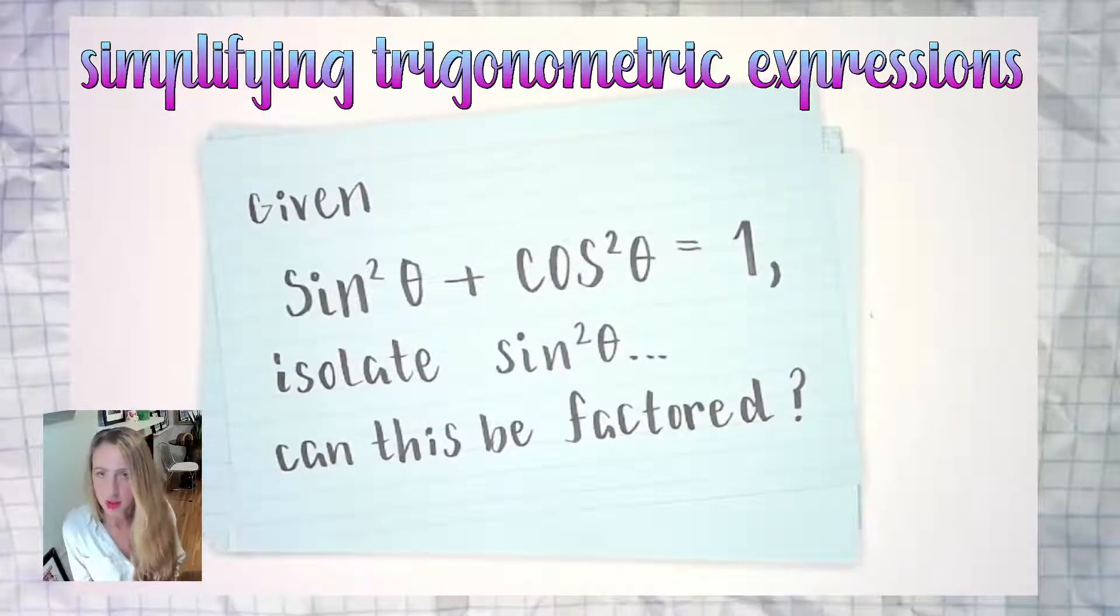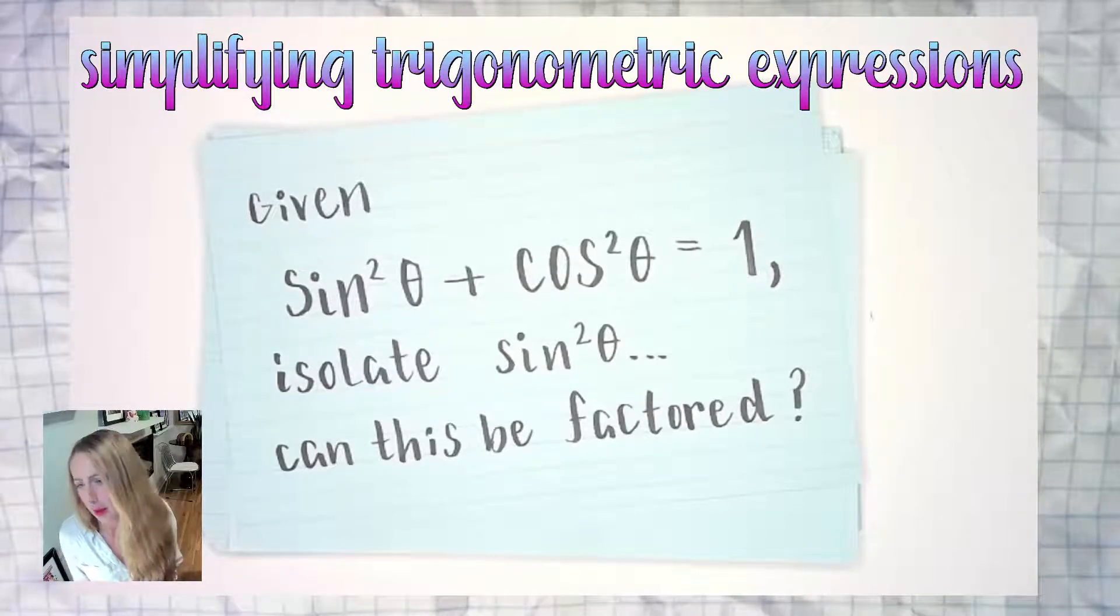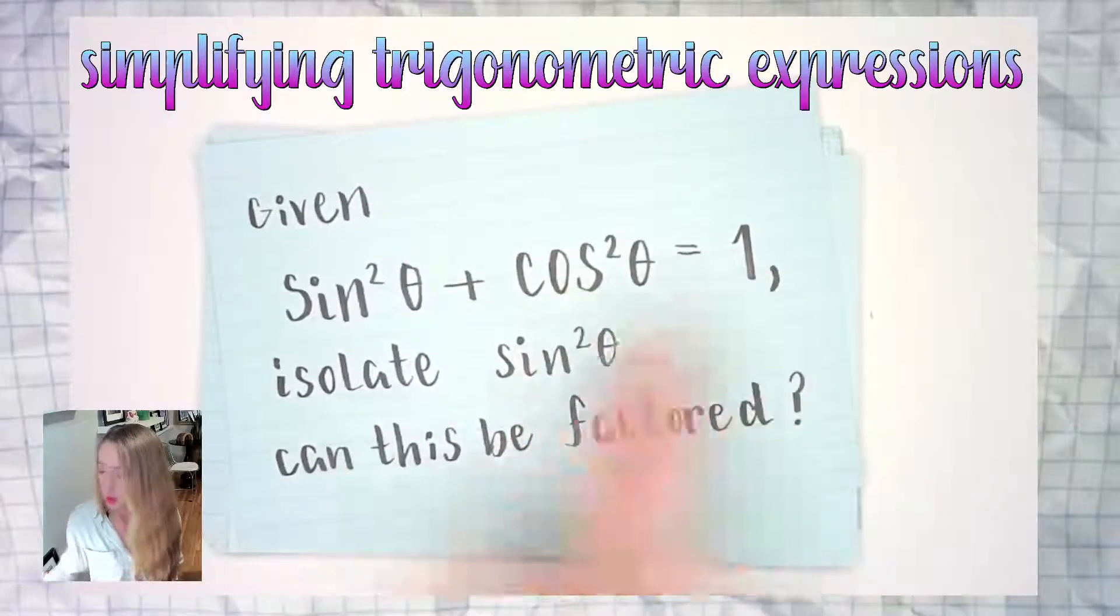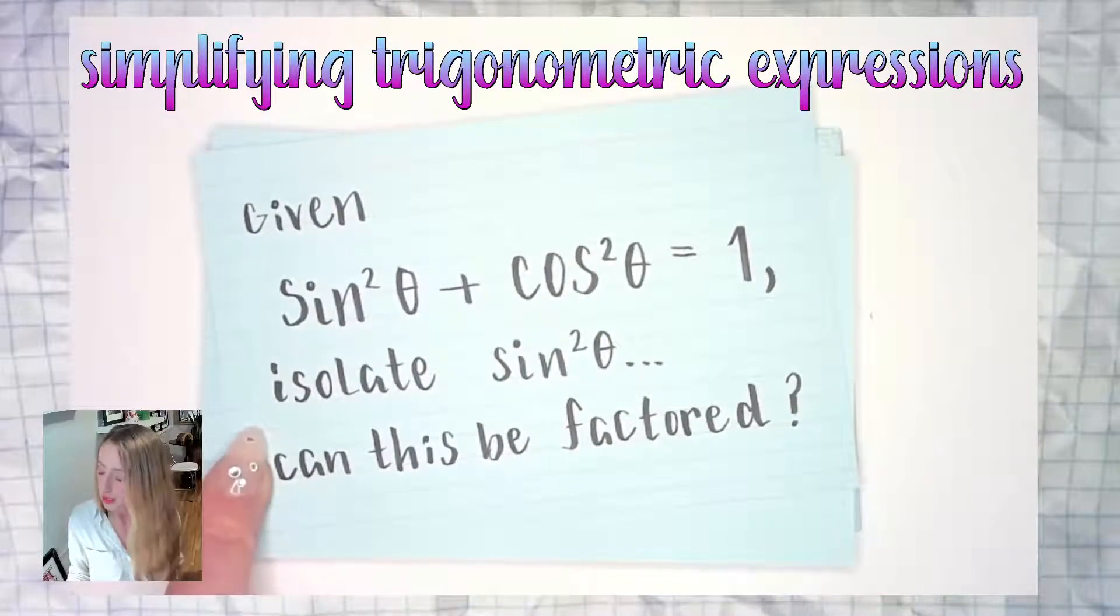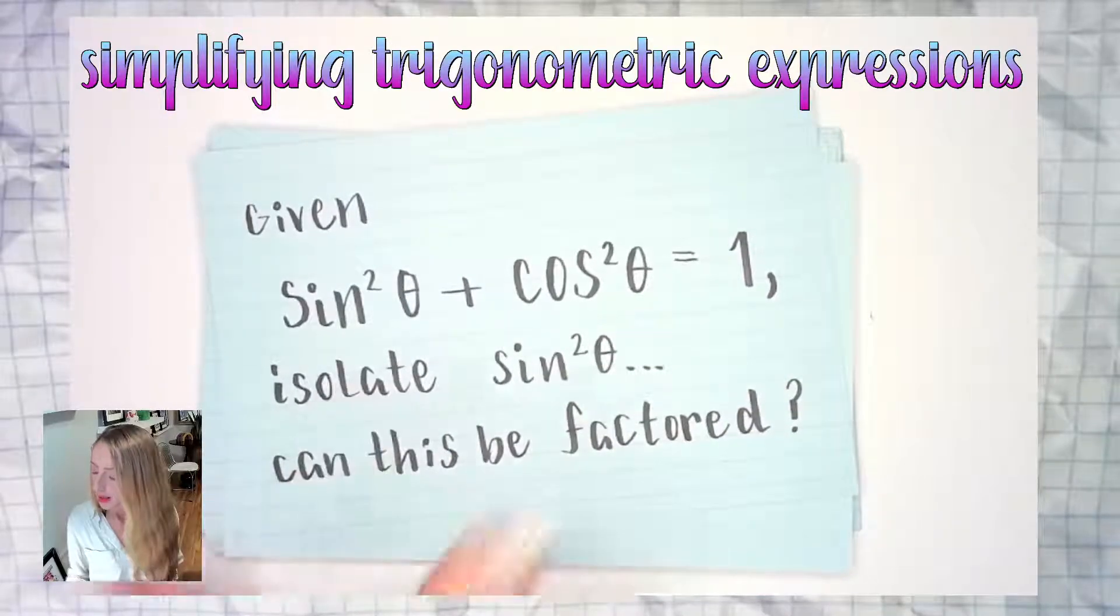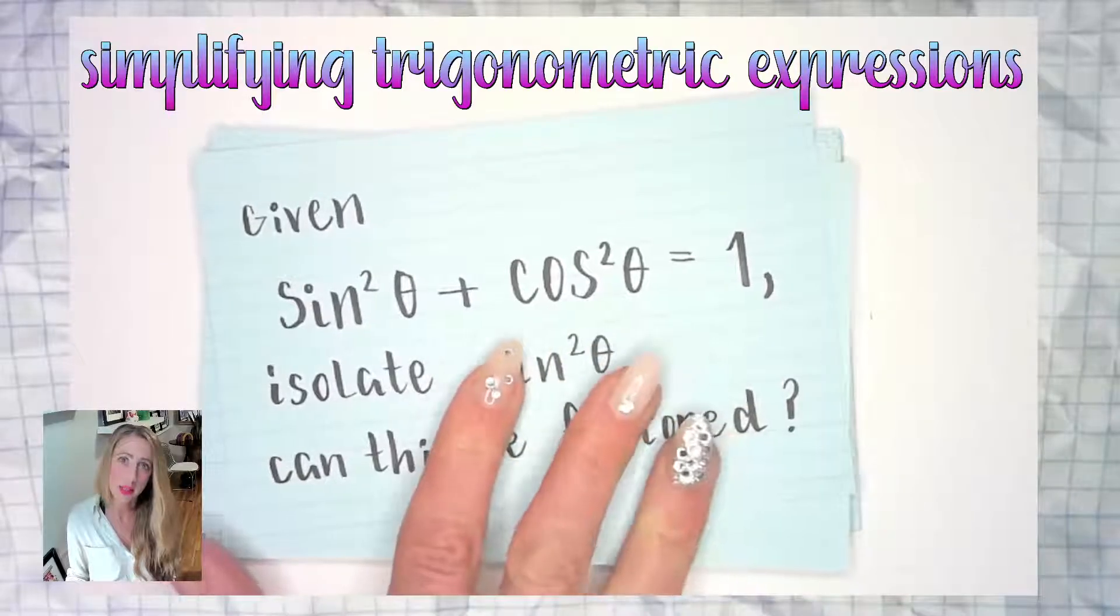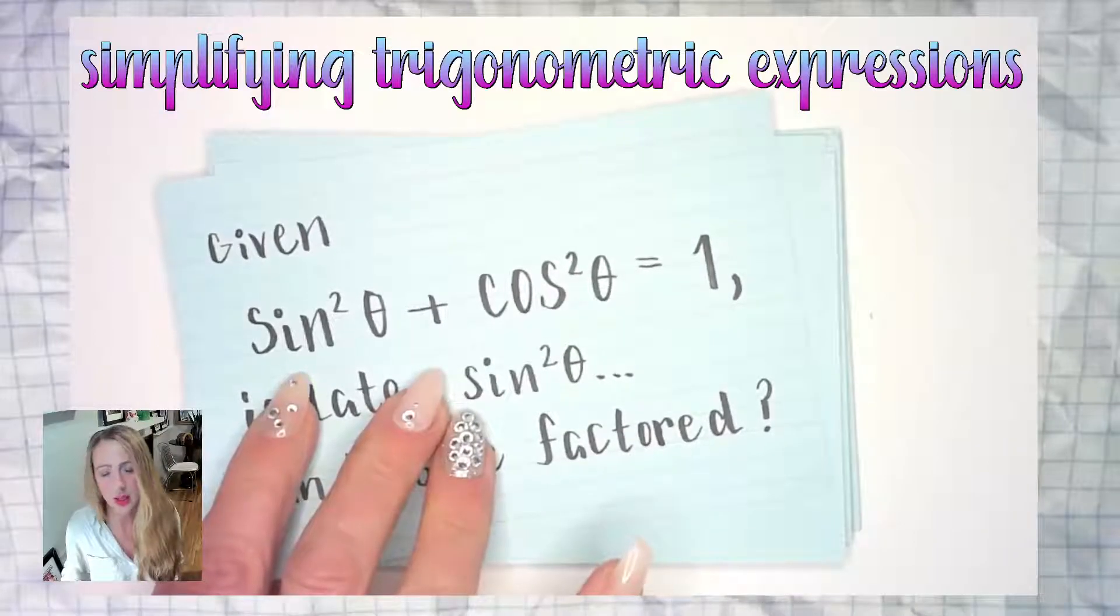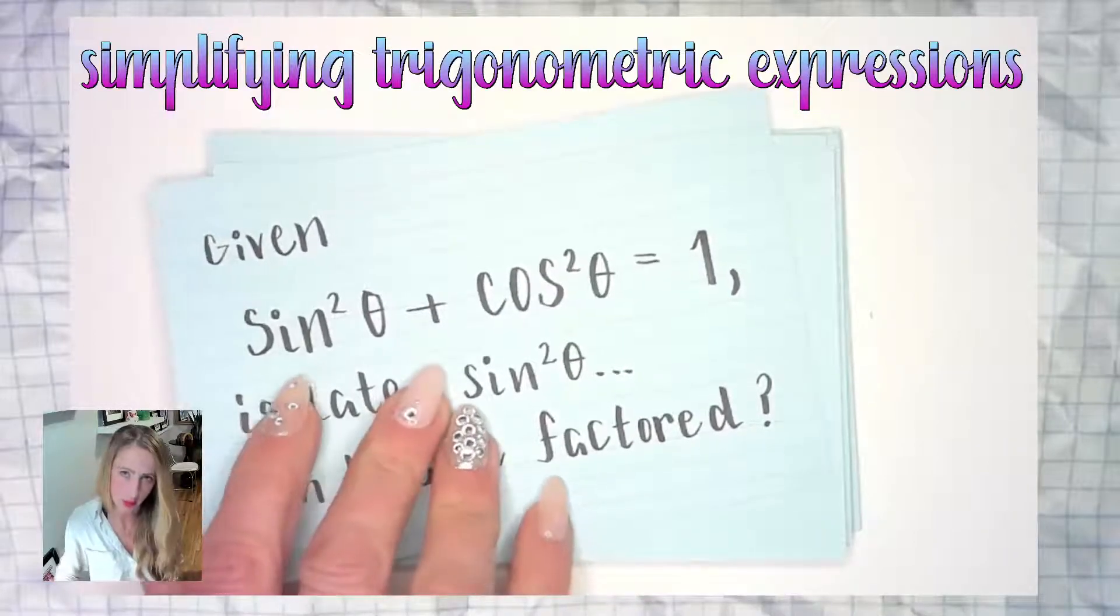So given there's our Pythagorean identity, the classic original sine squared theta plus cosine squared theta equals 1. Isolate sine squared theta, and just as an extra we don't really need the second part for this particular example. Can this be factored? In order to isolate sine squared theta we'll subtract cosine squared theta from both sides so you'll have sine squared theta equals 1 minus cosine squared theta. Then we'll have a difference of two squares which we can factor using conjugates, 1 plus cosine theta and 1 minus cosine theta.